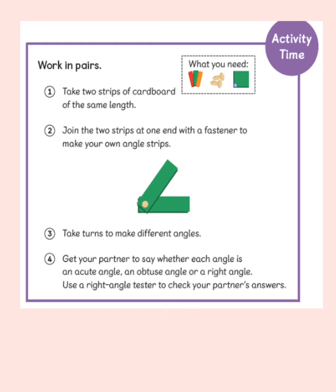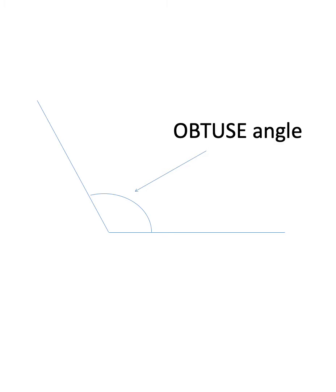How did you get on? Anyone manage to beat your parents, pets and partners? Now that you've got somewhat of an understanding of what an obtuse angle is, I'd like you to draw one using two lines coming together to make one angle. Hopefully you ended up with something like this. The angle is larger than a right angle, or 90 degrees, and so it is an obtuse angle. And we mark it again with a plain arc, not a square.